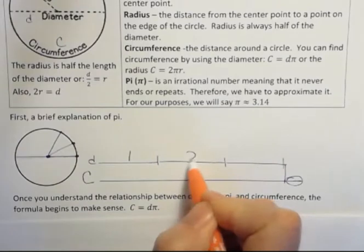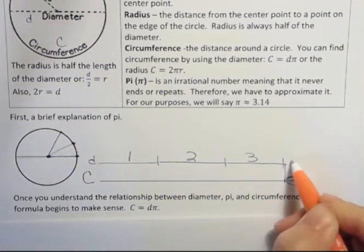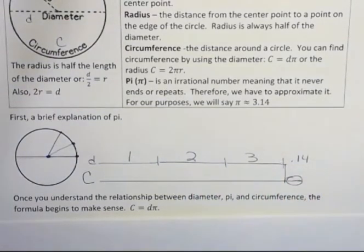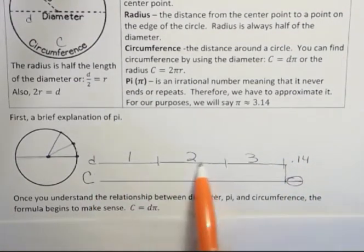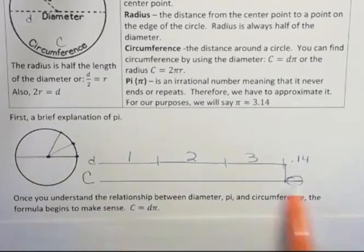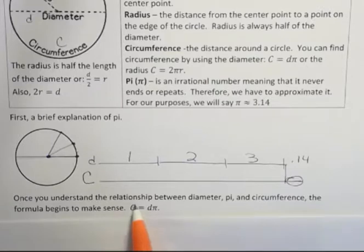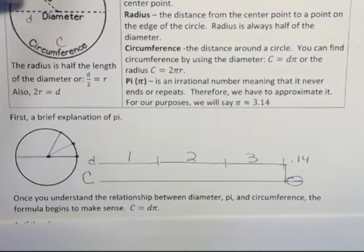Notice this is 1, 2, 3, and this is 0.14, about. And it took centuries for them to figure out what that little bit was. But what it says is that 3.14 diameters equal the circumference. And that makes this formula make sense because the circumference equals the diameter 3.14 times. That's how many diameters it takes to make a circumference. And that's what pi is.